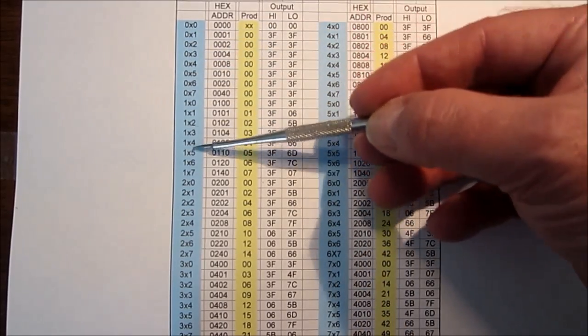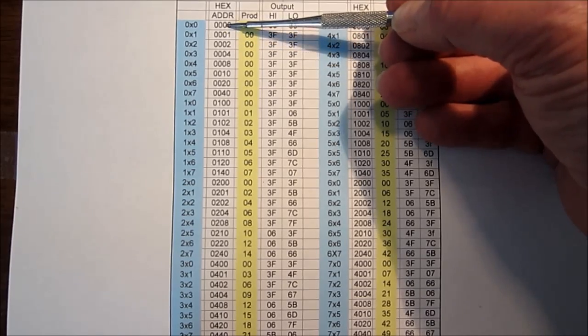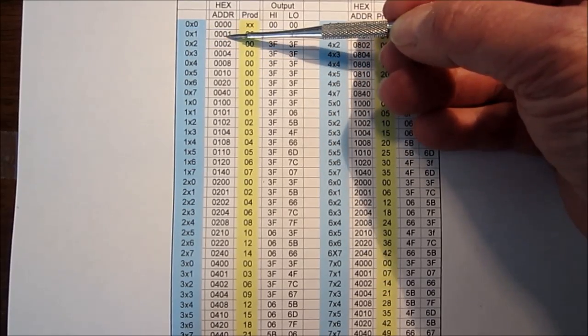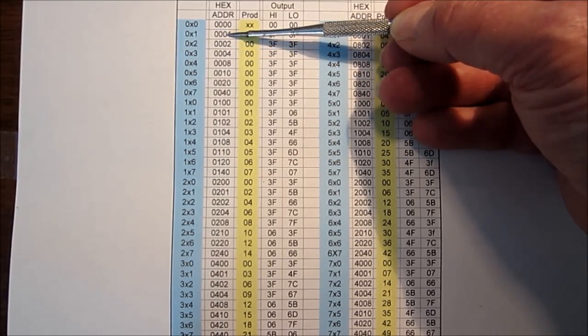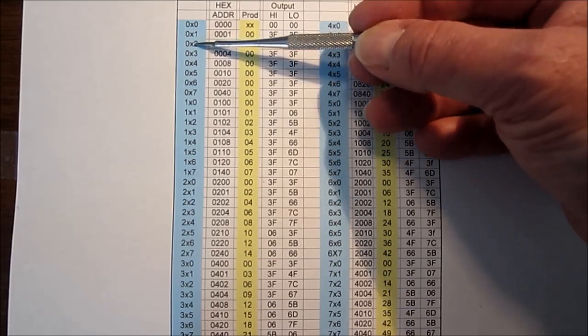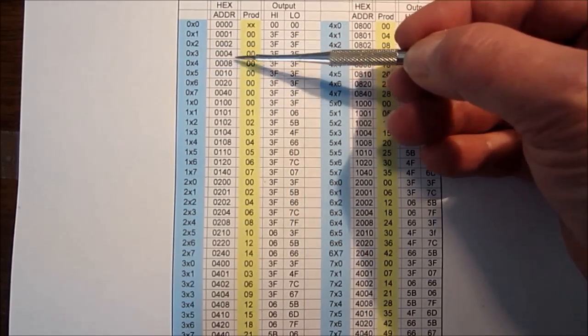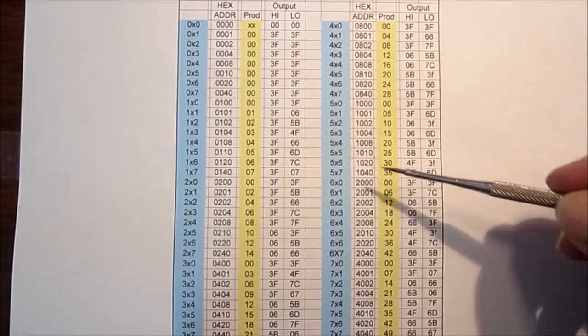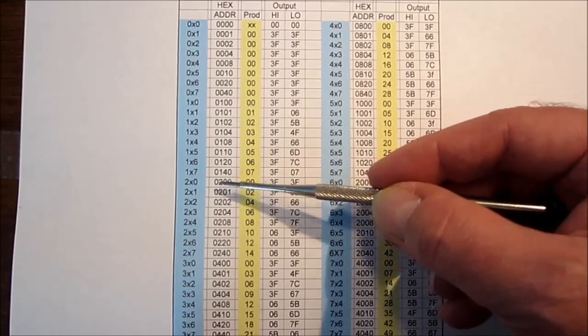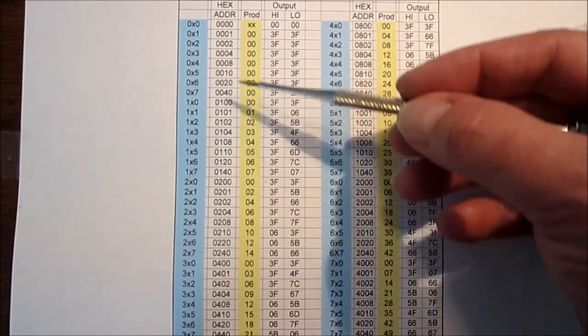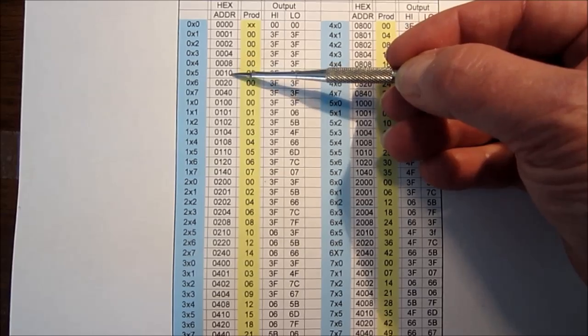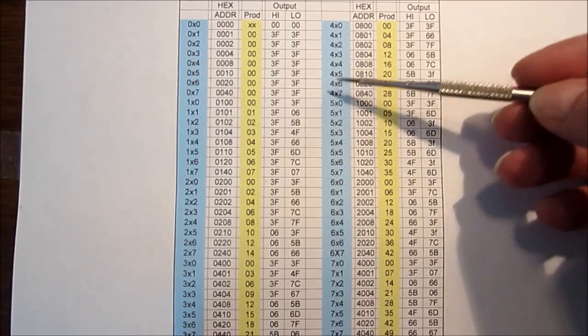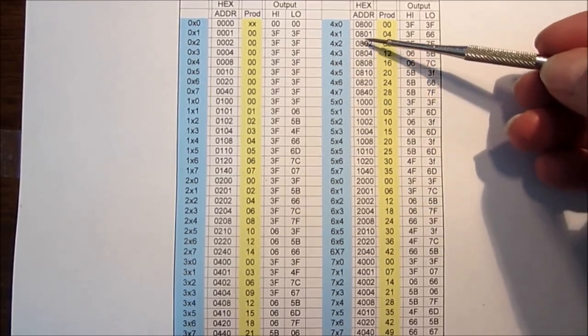But we start off at address 0 for 0 times 0. For 0 times 1, we end up at address number 1. At 0 times 2 at address 2. But now with 0 times 3 at address 4, and that's because we are stepping that bit one address line over at a time. So we go 4, 8, 10 hex, 20 hex, 40 hex, 100 hex, 101, and you see we start making huge jumps.